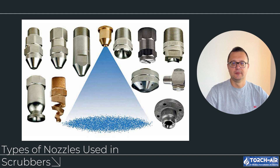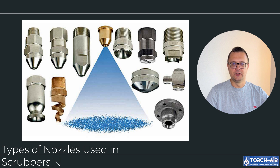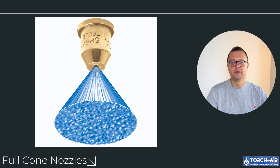Hey everyone, Michael Klepik here. Today we're diving into an essential topic for anyone working with scrubbers: the different types of nozzles used in scrubbers, and when you might opt for alternative methods like water overflows, liquid seals, or other technologies. In scrubbers, selecting the right type of nozzle is critical for efficient operation, but depending on the situation, nozzles might not always be the best option. Nozzles play a crucial role in scrubbers by atomizing the scrubbing liquid and ensuring it mixes effectively with the gas stream, and the type of nozzle you use can greatly influence the scrubber's performance.